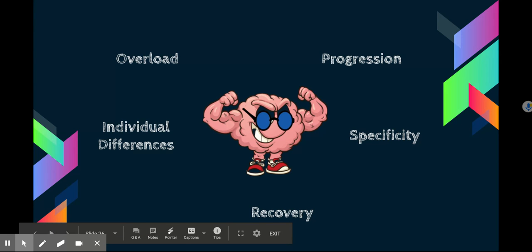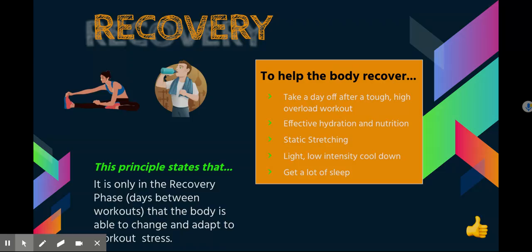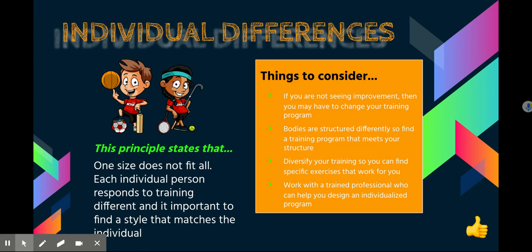The fifth principle is individual differences. One size does not fit all. Each individual person responds to training differently, and it's important to find a style that matches the individual. If you're not seeing improvement, you may have to change your training program. Bodies are structured differently, so find a training program that meets your structure. Diversify your training to find specific exercises that work for you. Work with a trained professional who can help you design an individualized program. Don't try to force yourself to do something you're not adapted to do, and sometimes it takes time to figure out what really works for you — so be patient.